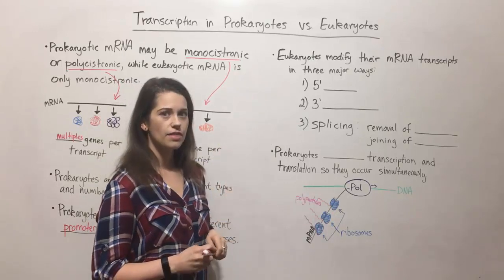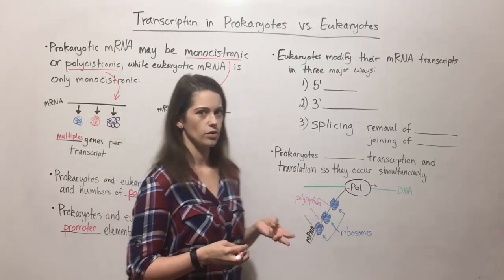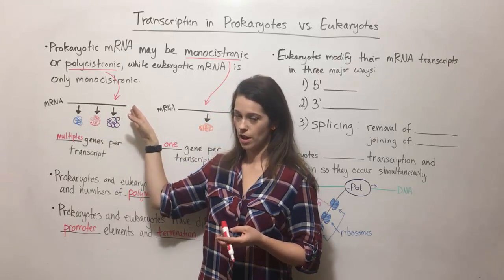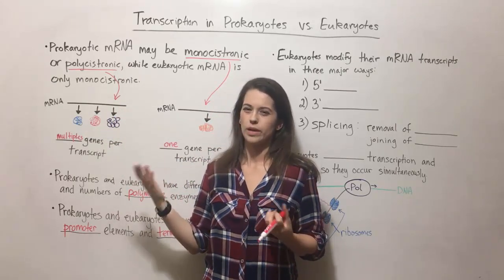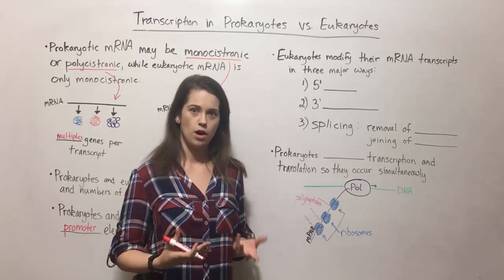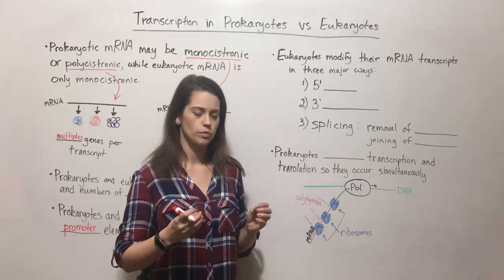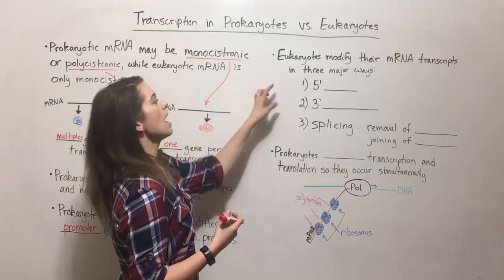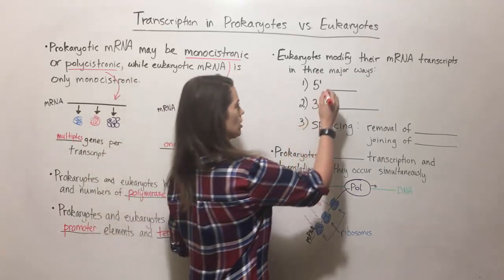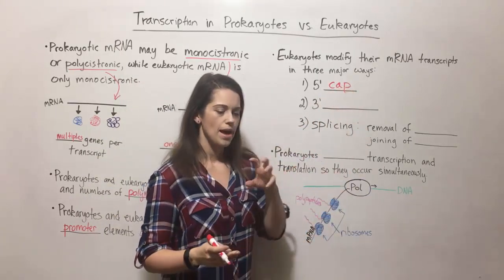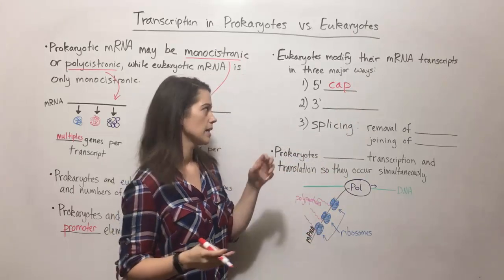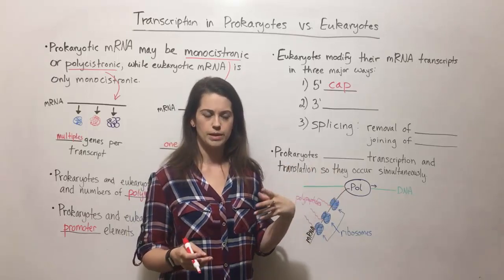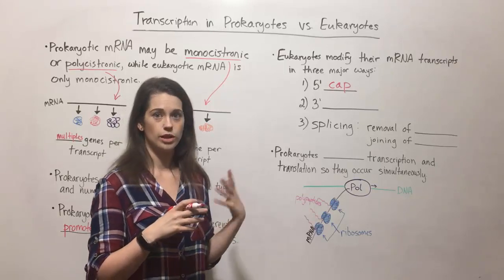Eukaryotes also modify their mRNA transcripts in three major ways. When transcription ends in eukaryotes, we have what's known as pre-mRNA. For it to become mature mRNA, it goes through post-transcriptional modifications — modifications that happen once transcription has ended. The first is the addition of a five-prime cap. The five-prime cap helps target the mRNA out of the nucleus through a nuclear pore and helps the ribosome find the mRNA so it can dock onto it to proceed with translation.